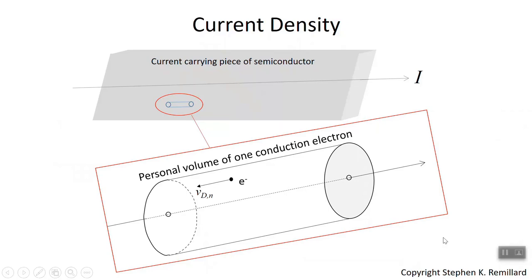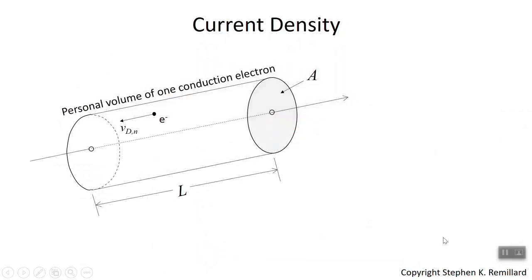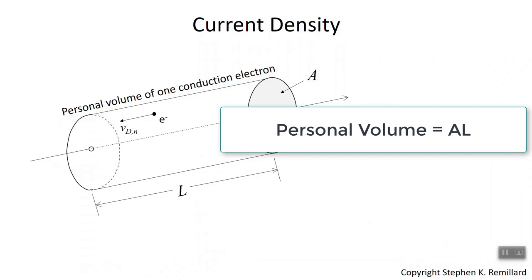The personal volume has a length L and a cross-sectional area A, so the actual personal volume — base times height — is A times L.